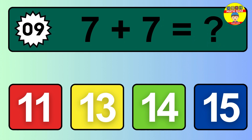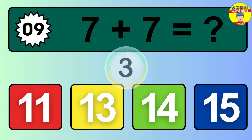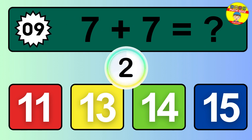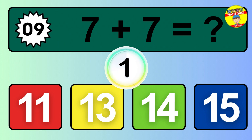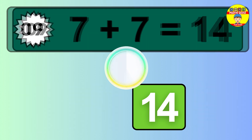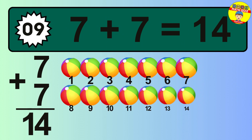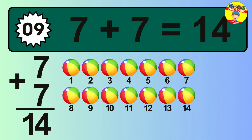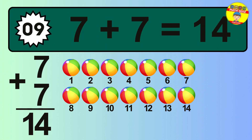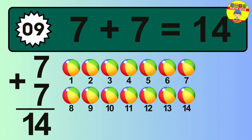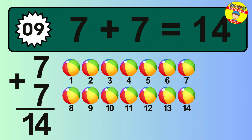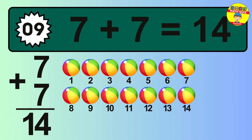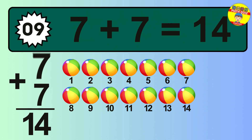Question 9. 7 plus 7 equals what? Let's count it: 1, 2, 3, 4, 5, 6, 7, 8, 9, 10, 11, 12, 13, 14. So the answer is 7 plus 7 is 14.